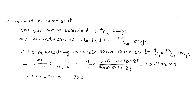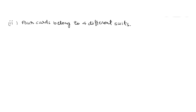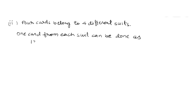So 4 cards of the same suit can be selected in 2860 ways. Part 2: 4 cards belonging to 4 different suits. Each suit has 13 cards and we have to select 1 card from each suit. This can be done as 13C1 × 13C1 × 13C1 × 13C1.